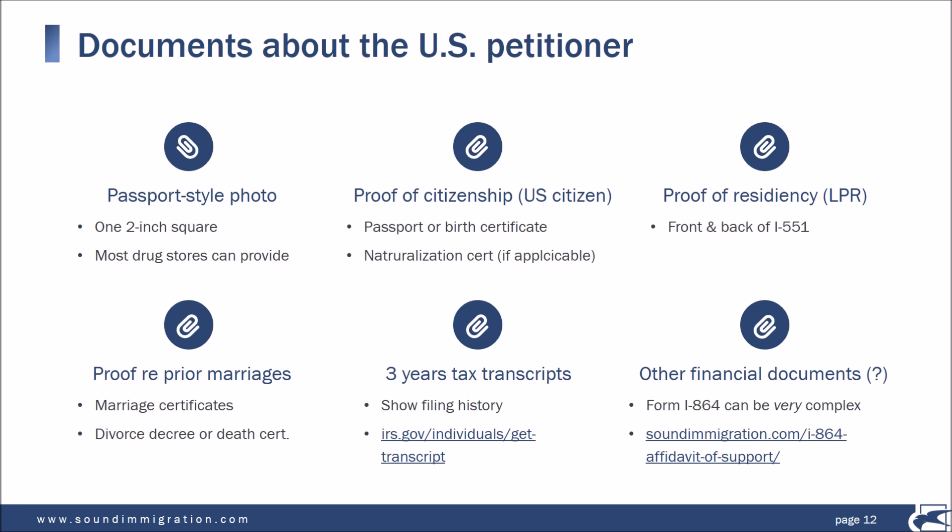In support of the I-864 financial support document, you're going to want to provide the past three years of tax transcripts — basically the filing history of your IRS federal tax returns. Strictly speaking, only the most recent year is required, but best practice is to go ahead and file all three. They're freely available at IRS.gov/individuals/get-transcripts. You do not have to pay a fee to request your transcripts. You're technically allowed to provide copies of your former tax returns rather than a transcript, but a transcript is best practice — it's the definitive history of your tax filings.